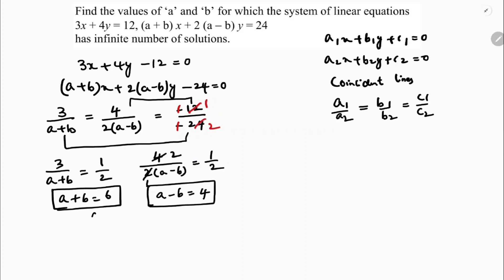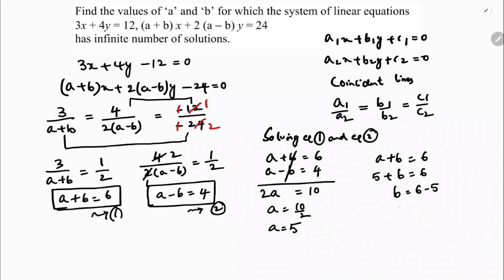So now I need to solve these two equations. Solving equation 1 and equation 2: a plus b equals 6, a minus b equals 4. If I will add these two equations, 2a is 10, a is 10 by 2, so the value of a is 5. Since a plus b is 6, 5 plus b is 6, the value of b is 6 minus 5, so b is 1. Therefore the value of a is 5 and b is 1.